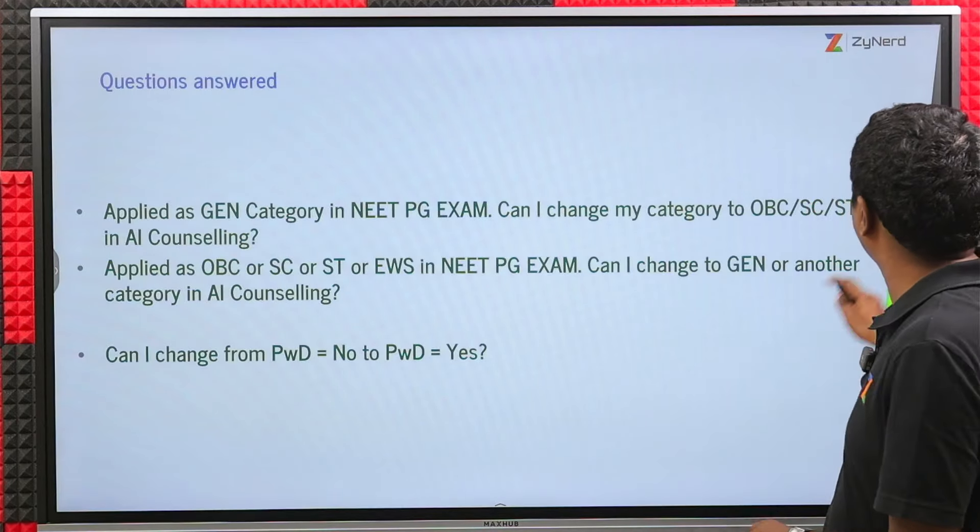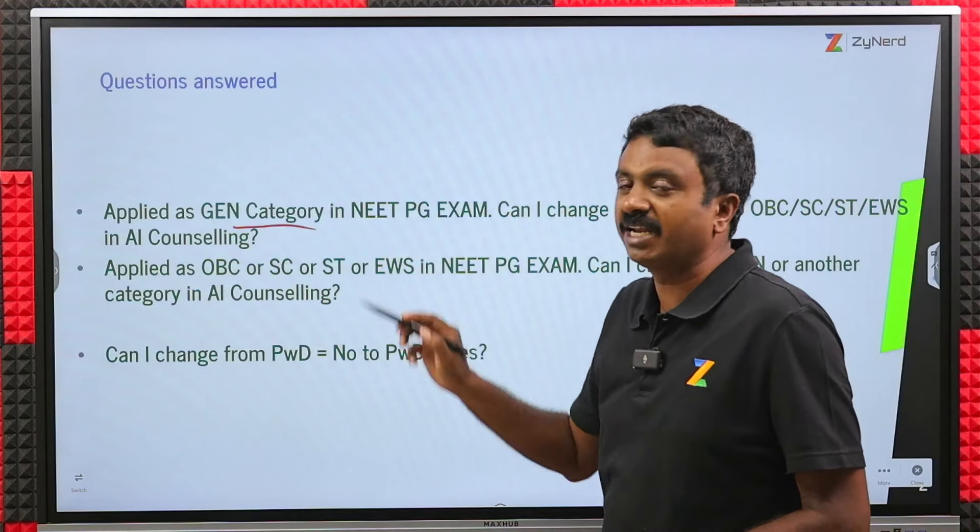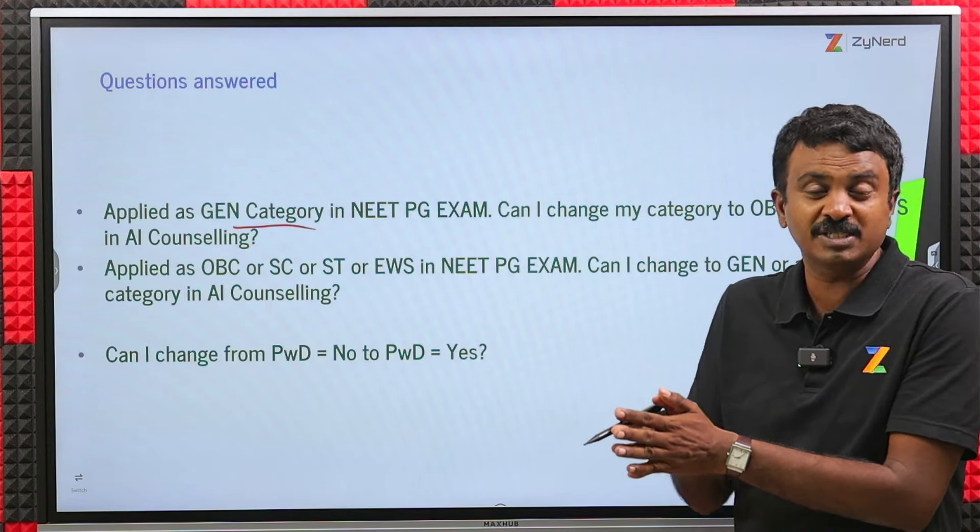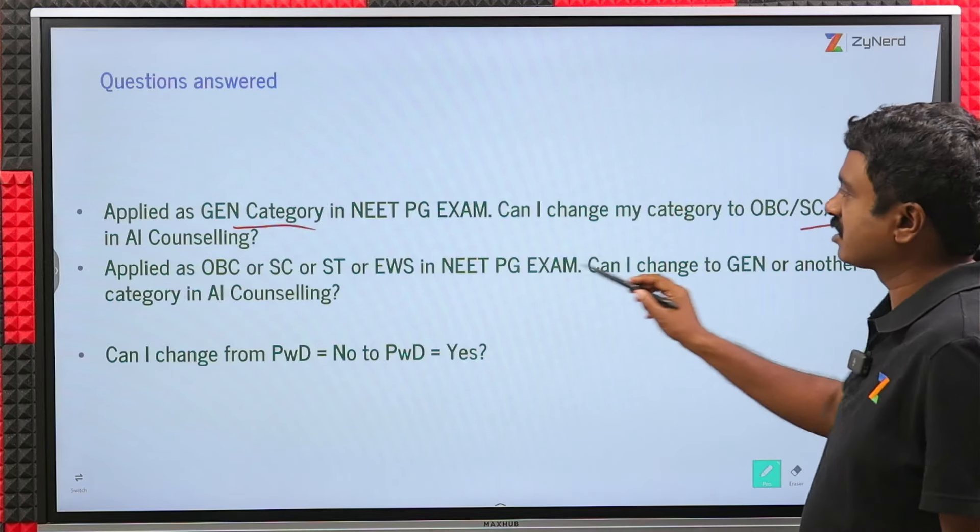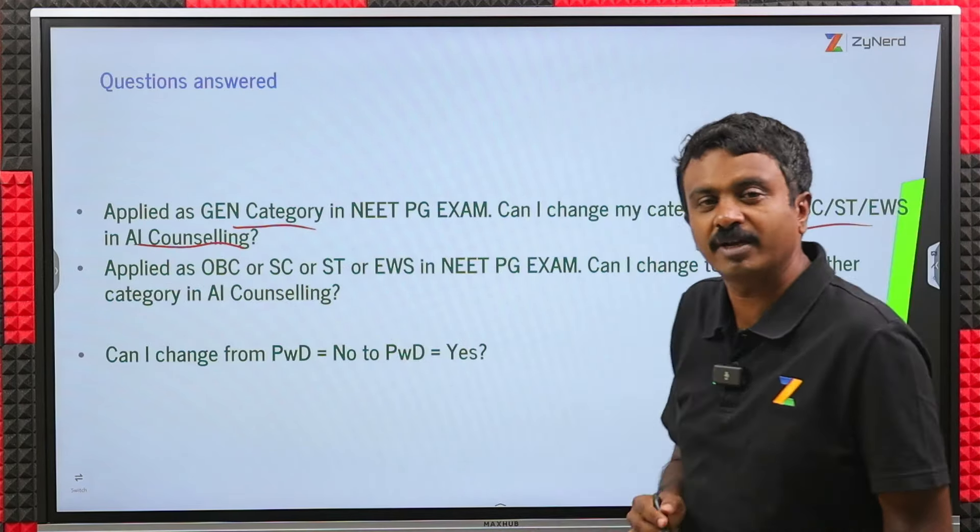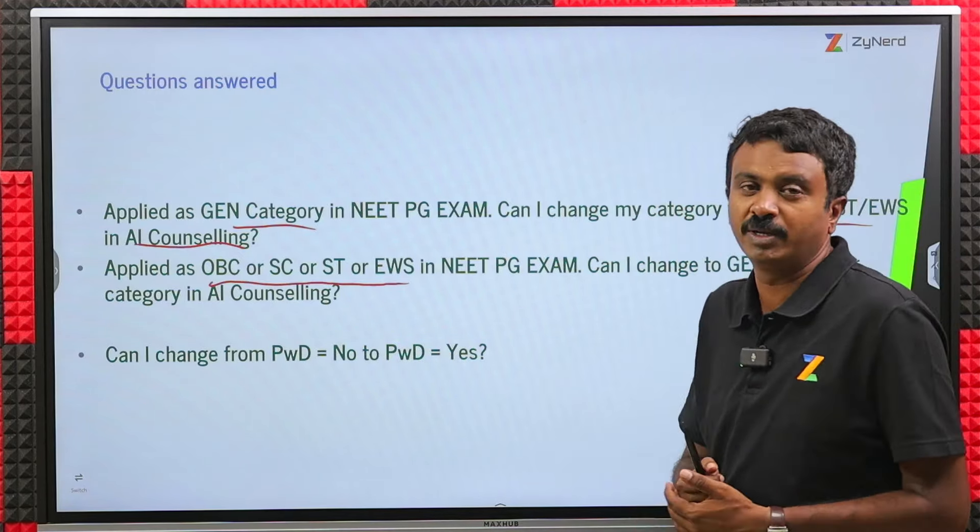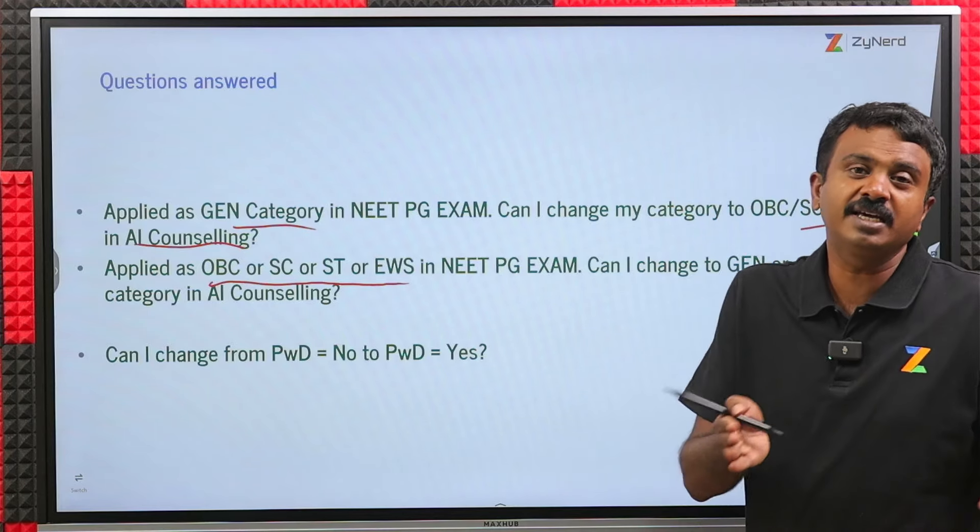Now we will be looking at, since state is not taken from here, you can apply separately as state, just give those certificates and go on. We will only be looking at All India based information. What are the category changes possible? The queries that we will be addressing here is, I applied as GEN category in the NEET PG exam. Can I change to OBC, SC, ST or EWS? In what? In the All India Counseling when it happens.